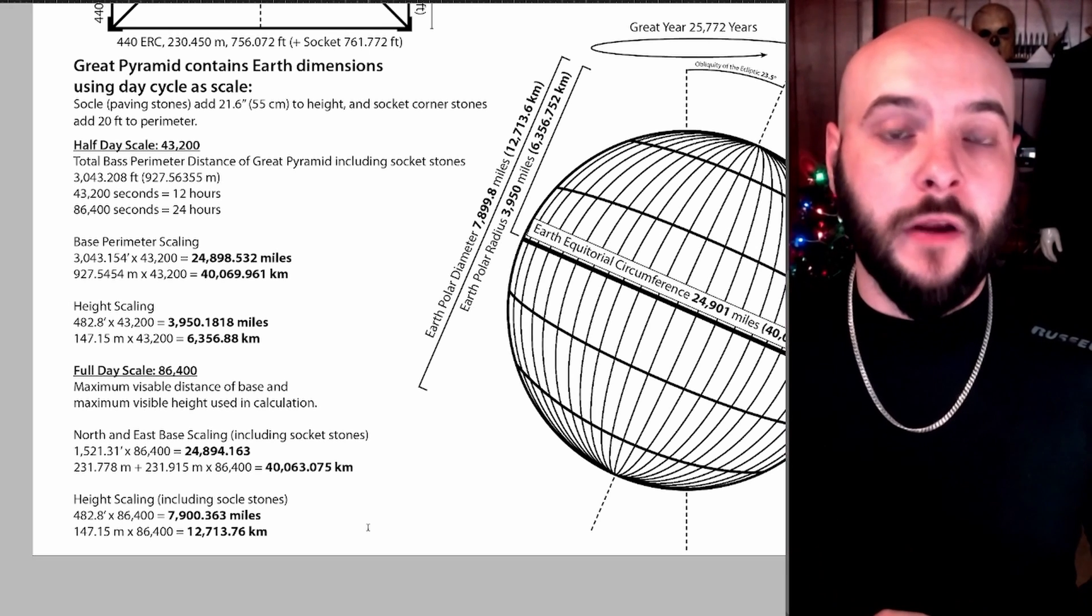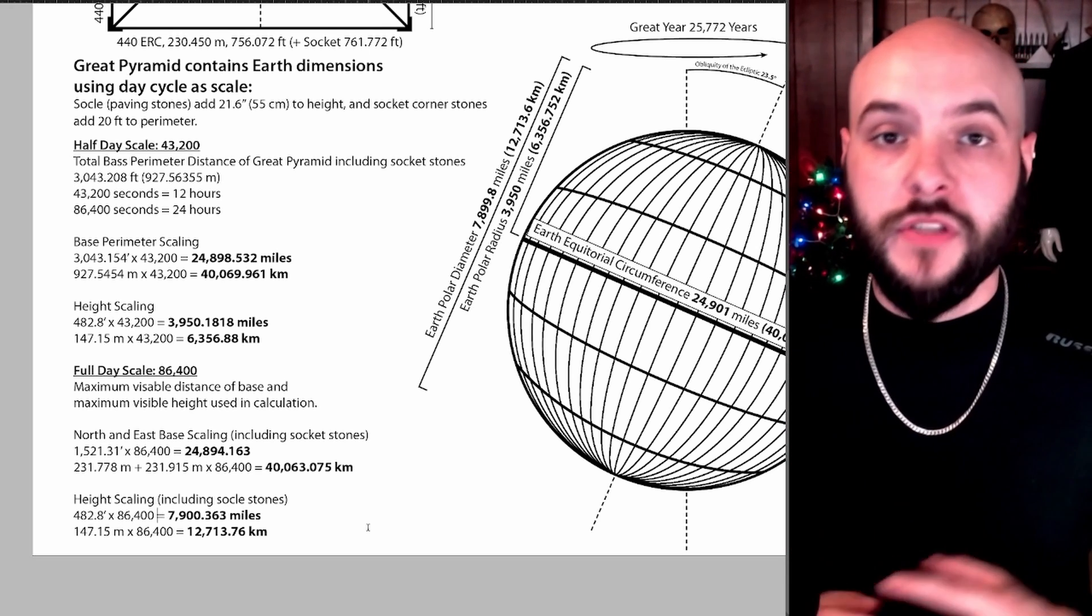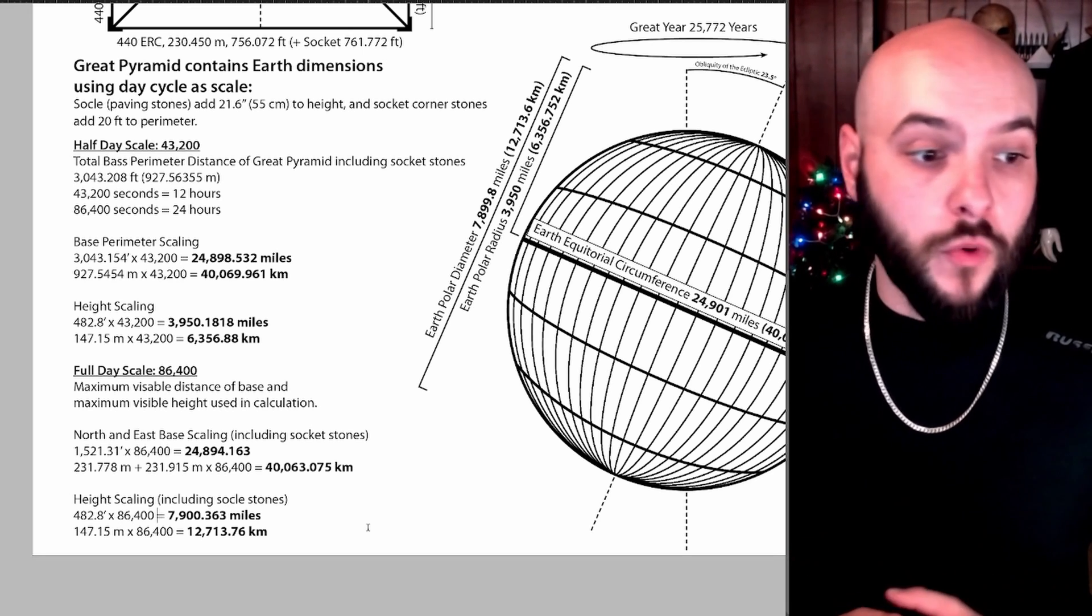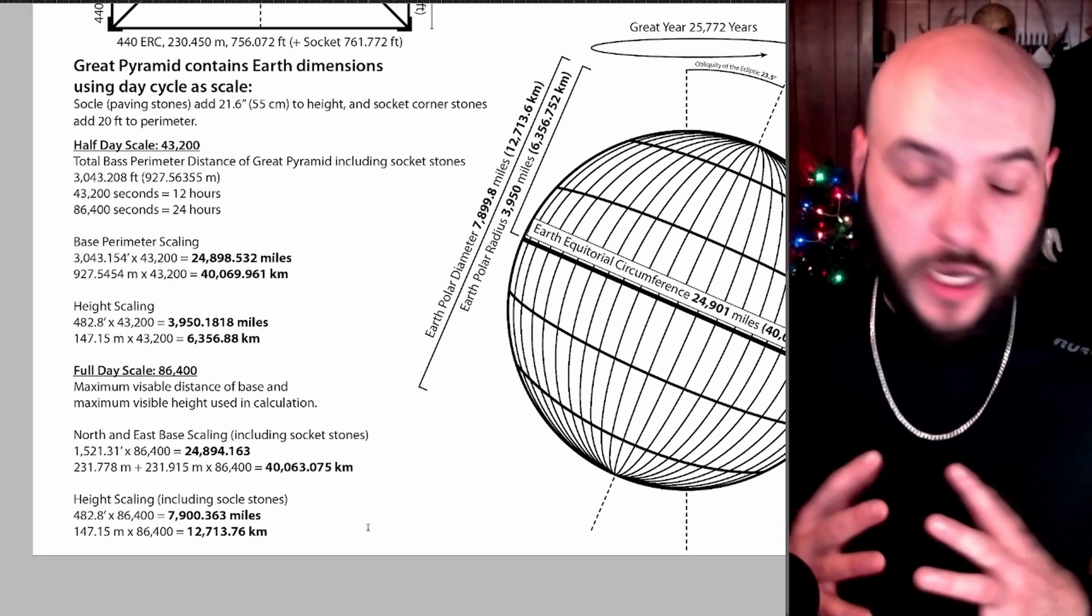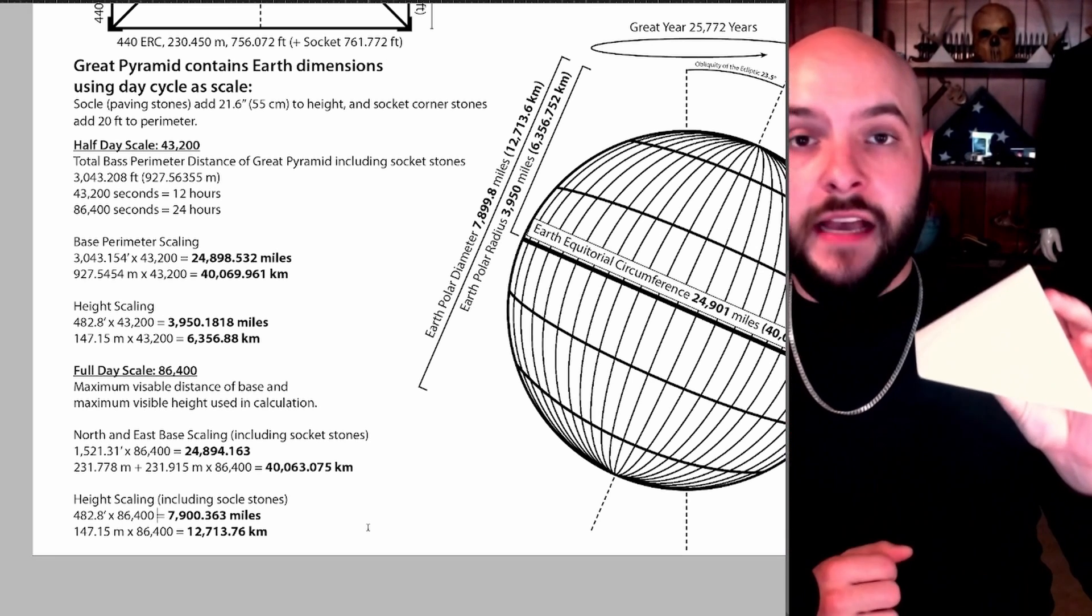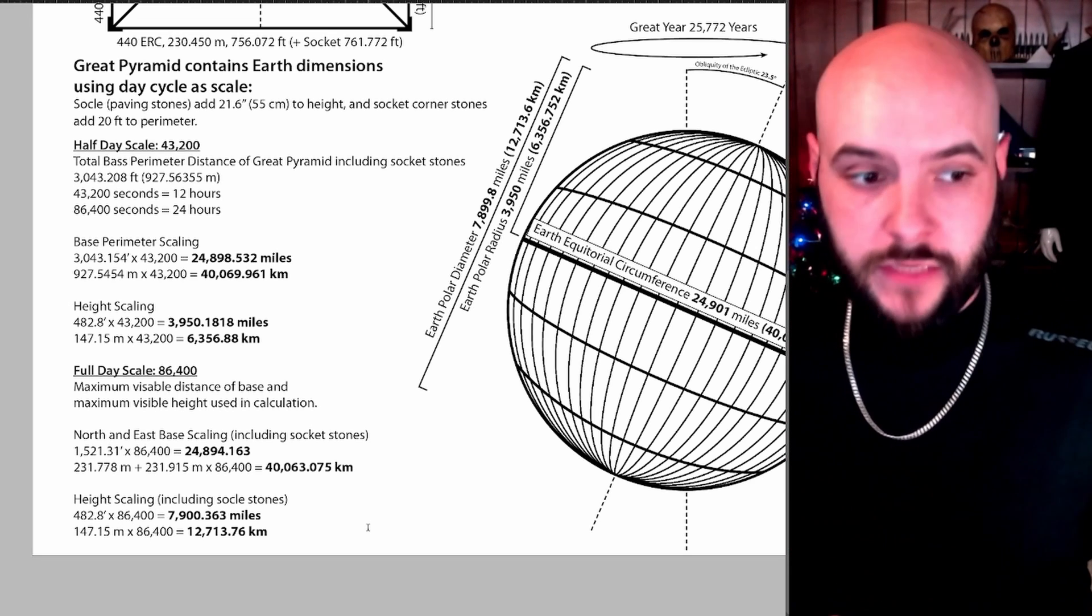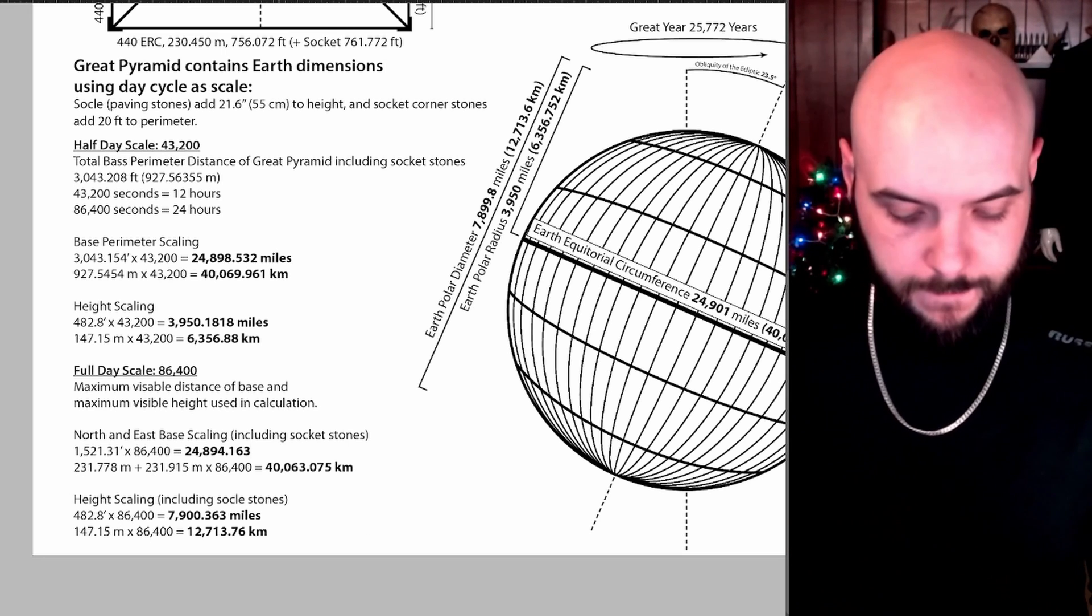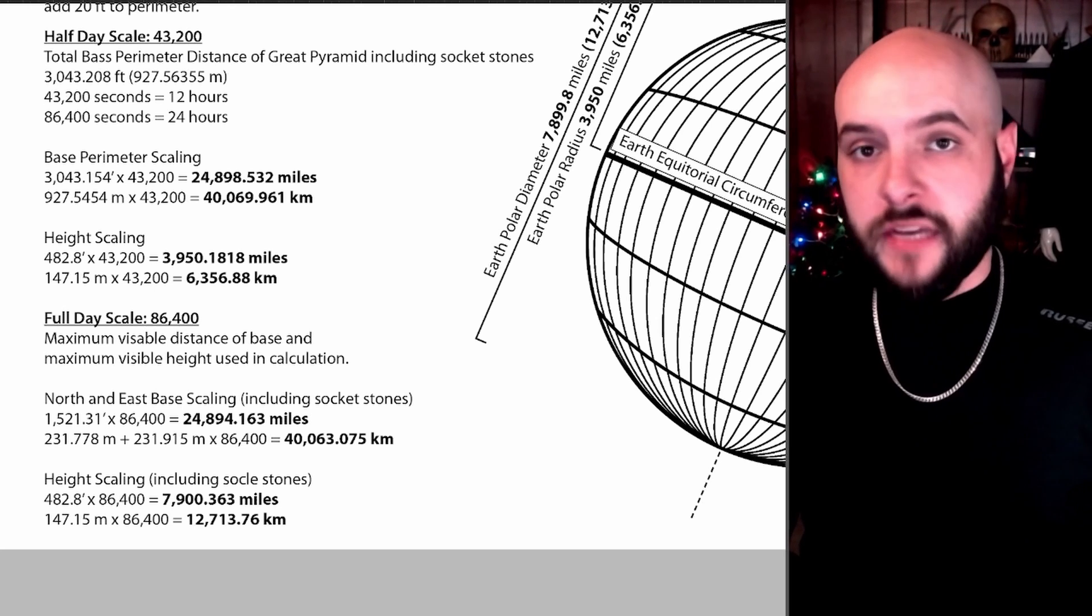Now when it comes to scaling the Great Pyramid using the full day cycle, the total height of that giant pyramid equals the polar radius at 7,900.363 miles or 12,713.76 kilometers, which is unbelievably close to the actual dimensions of the planet. And scaling it at 86,000 means that only two sides of the Great Pyramid gives us the equatorial circumference of the planet at 24,894.163 miles or 40,063.075 kilometers.